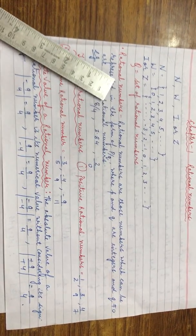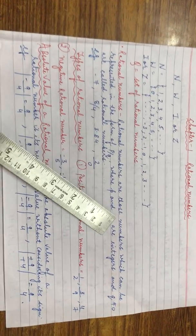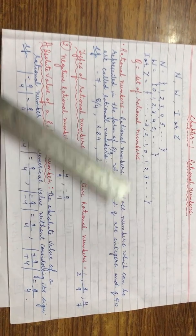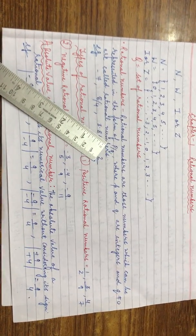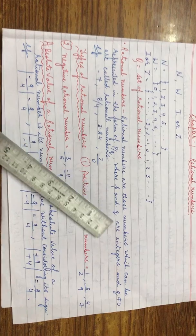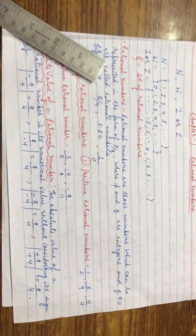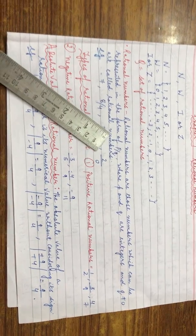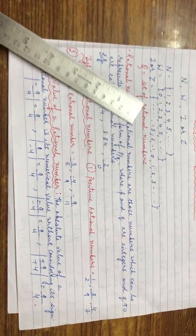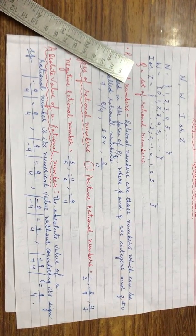Now we come to the main definition: Rational numbers are those numbers which can be expressed in the form of P upon Q where P and Q are integers and Q is not equal to 0. The set of rational numbers is represented by capital Q.